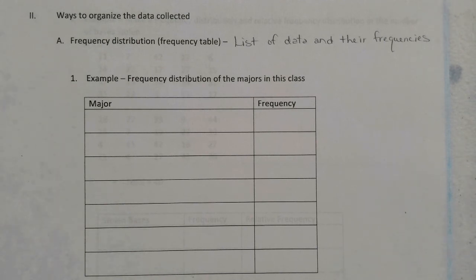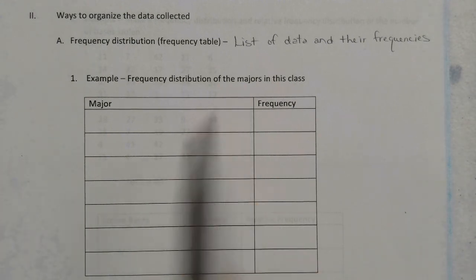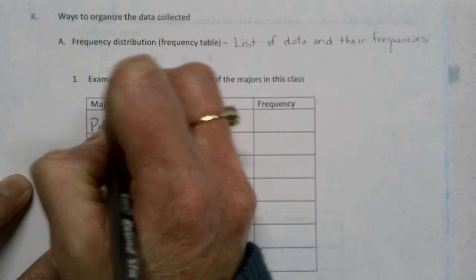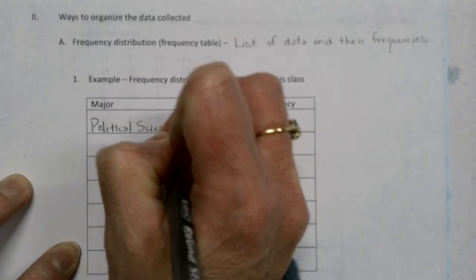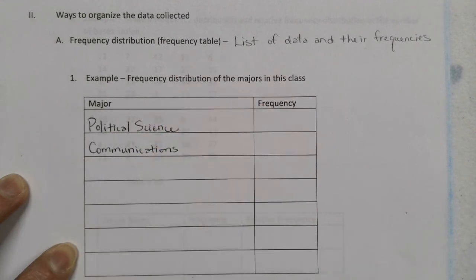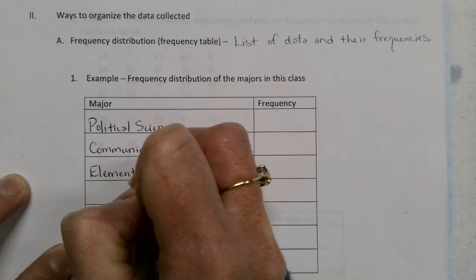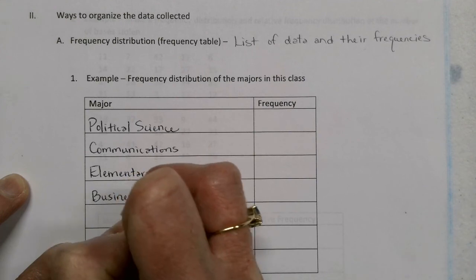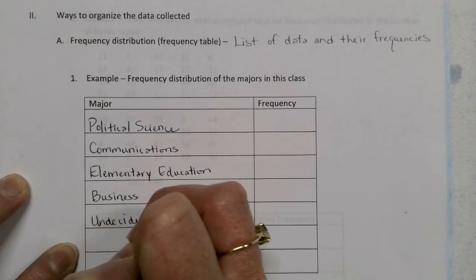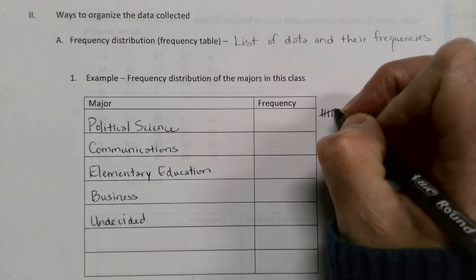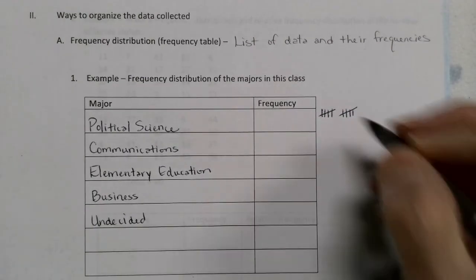Your frequency table is simply a list of the data and their frequencies. I've got an example here. In my class one semester, I made a frequency distribution of all the majors in the class. Some people said they were political science majors, some said communications majors, some said elementary education majors, and then one fellow said he was undecided. So those are all the different majors that were in that class. Then I said, raise your hand if you're a political science major, and tallied them up with tick marks. I came up with 14 students who were political science majors.